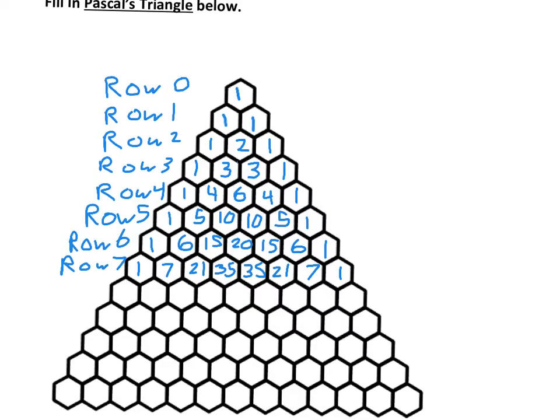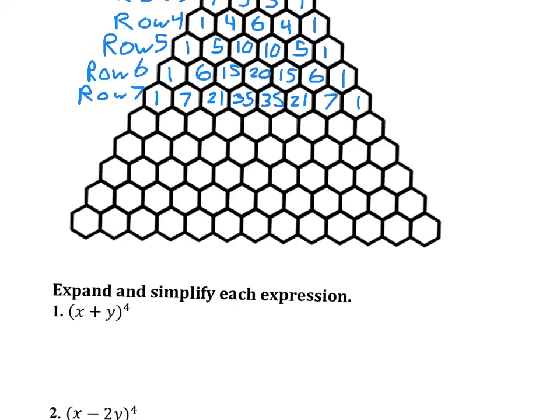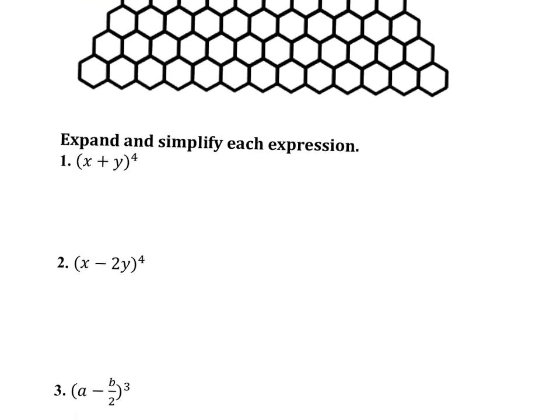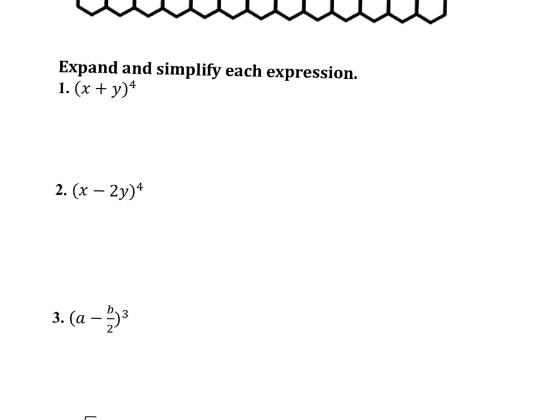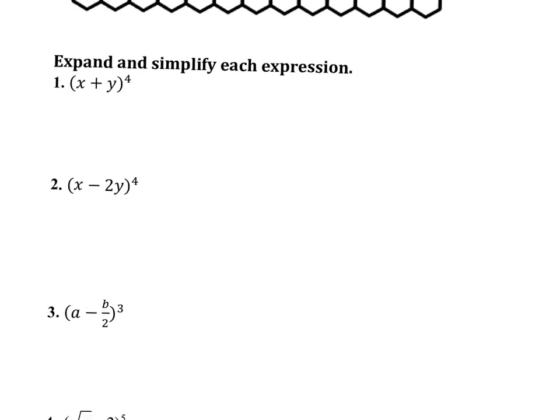So now we need to talk about what this is used for. Pascal's triangle is used for binomial expansion. On number 1, we have a binomial. X plus Y is a binomial because there are two terms. The exponent is 4. So we're going to expand that. Looking at row 4 of Pascal's triangle, we see that the numbers are 1, 4, 6, 4, 1. These are going to serve as our coefficients.